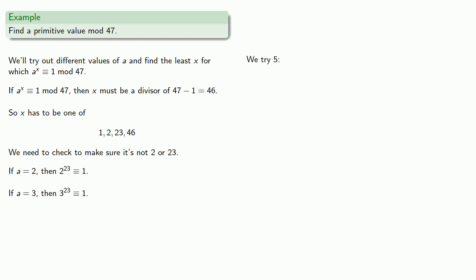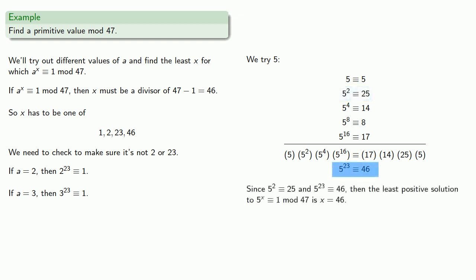We can try 5. We know that 5 to the 2nd is not 1, and 5 to the 23rd is not 1. That means that 5 to the 46th must be the least positive solution to 5 to the power of x congruent to 1 mod 47. And so 5 is primitive.